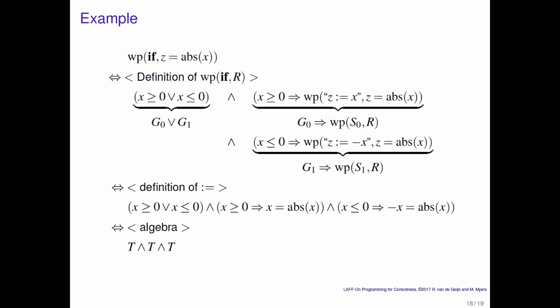And finally, if x is less than or equal to 0, then that implies that minus x is equal to the absolute value of x. And that gives us our third true. And if we then apply n simplification, we just end up with true. So what do we know? We know that this code segment is correct because we proved that it is correct.